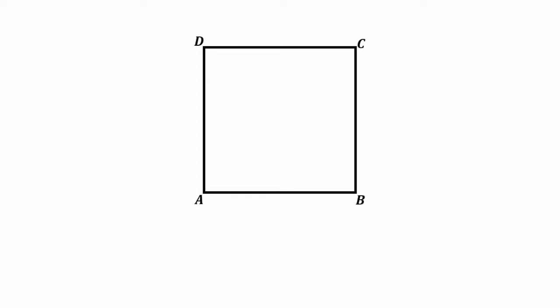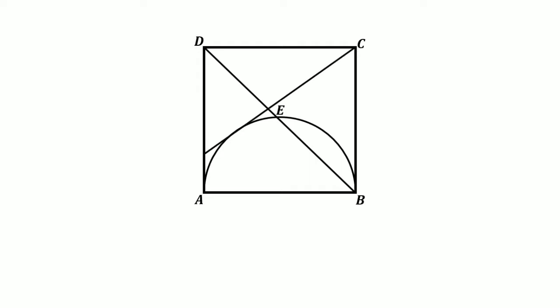Hi everybody. Here is a square ABCD. In this square, draw a semicircle by taking AB as a diameter, then draw the diagonal DB and it bisects the semicircle at point E. Now draw another line from point C such that it is tangent to the semicircle at point F. Now join the points F and B, and then F and E.